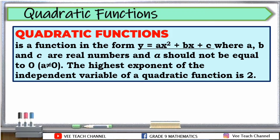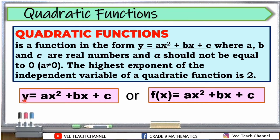The highest exponent of the independent variable of the quadratic function is 2. Maaalala niyo, ang ating quadratic equation is ax squared plus bx plus c is equal to 0. Pero dito, pag sinabi nating quadratic function, meron na tayong y, then equals to ax squared plus bx plus c. We write it as y is equal to ax squared plus bx plus c, or f of x is equal to ax squared plus bx plus c. Aside sa y, pwede natin gamitin ito.